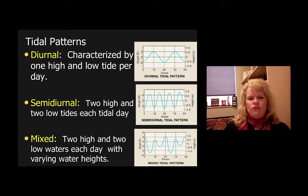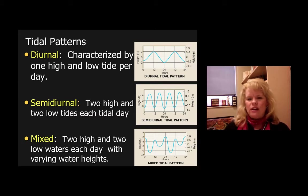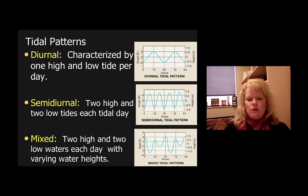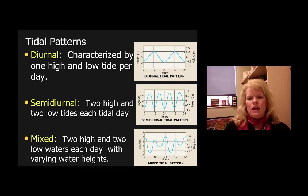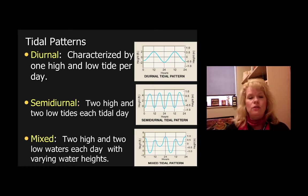What are tidal patterns? There are three: diurnal, semidiurnal, and mixed. Diurnal is characterized by one high and one low tide per day. Semidiurnal means two highs and two lows every tidal day. Mixed means you could get two highs and two low waters each day with varying water heights. These patterns are dictated by your latitude, the time of year, apogee, perigee, and all the factors we've just discussed.